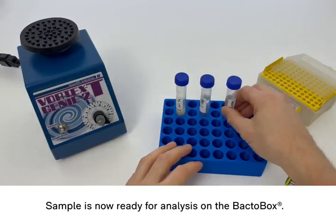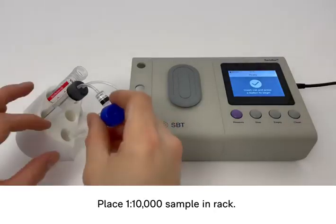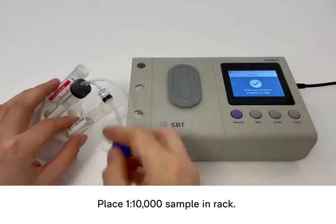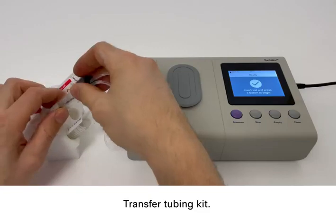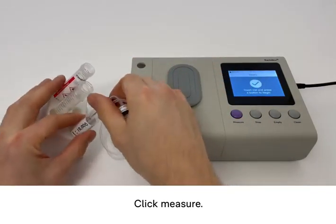The sample is now ready for analysis on the BactoBox. Place the 1 to 10,000 sample in the rack, transfer the tubing kit and click measure.